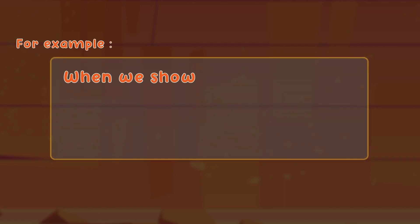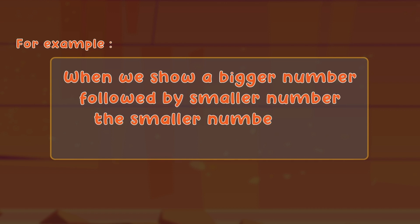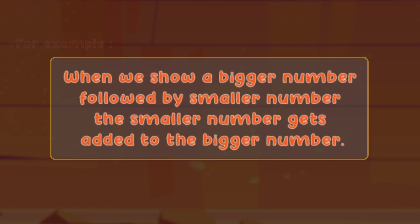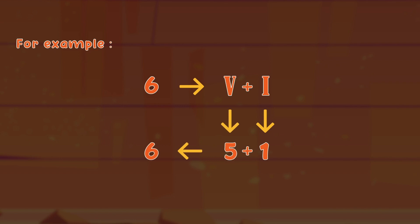When we show a bigger number followed by a smaller number, the smaller number gets added to the bigger number. For example, we write 6 as VI — this means I, which means 1, gets added to V, which means 5, to show 6.